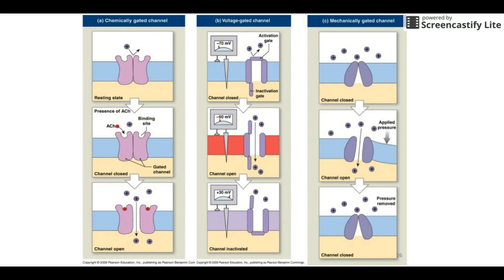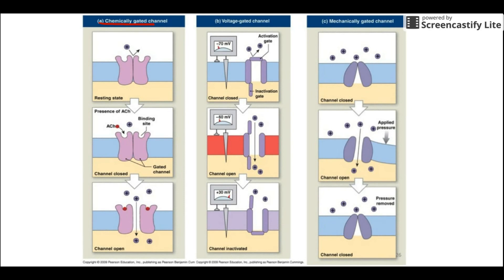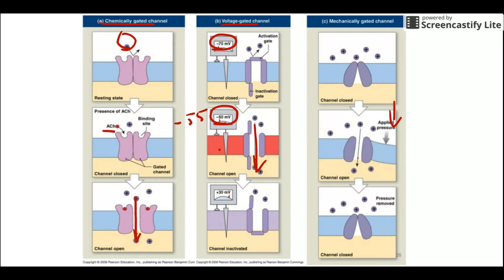A visual of the three types: a chemically gated channel stays closed until a specific chemical — like the neurotransmitter acetylcholine — binds to it, opening the door and letting sodium in. A voltage-gated channel is closed at negative 70 mV, but when voltage drops to around negative 55 mV, it opens and sodium can enter. A mechanically gated channel stays closed until you physically push on the membrane, which pulls the door open and lets sodium in.